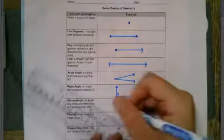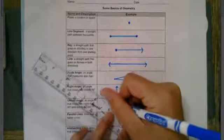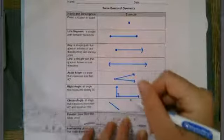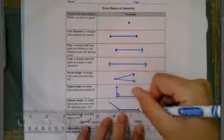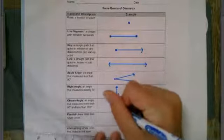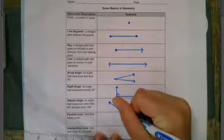Obtuse angle. An angle that measures more than 180. Okay.